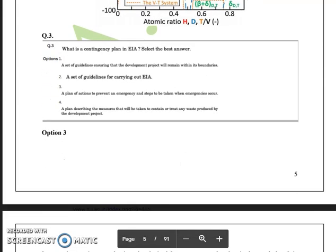Now, question number 3 which was a very interesting question based on EIA. EIA is quite an important topic as far as the NTA exam is concerned. They ask like what is a contingency plan in EIA and they have asked you to select the best answer.